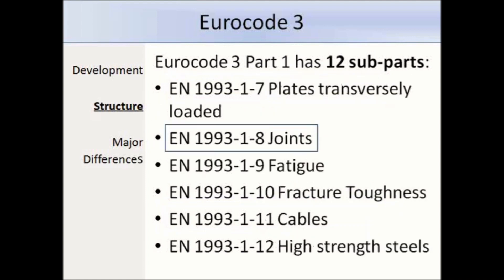Continuing on with the remaining sub-parts of EN 1993 Part 1, we have plates which are transversely loaded, joints — which we will need to refer to for the design of tension members — fatigue, fracture toughness, cables and high-strength steels.